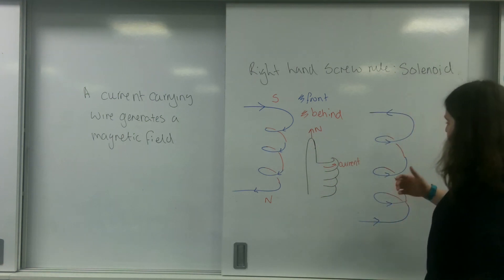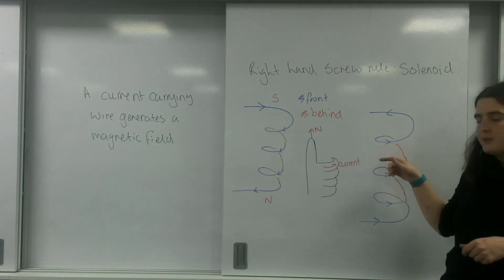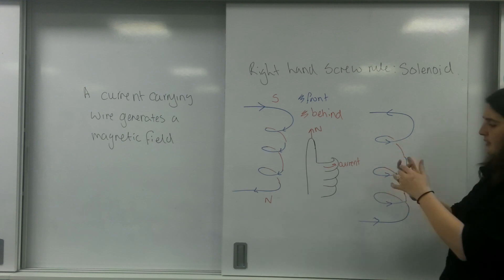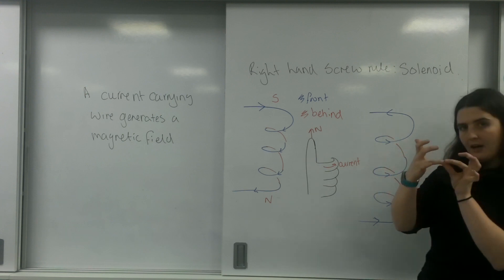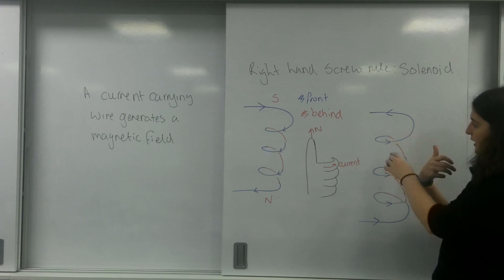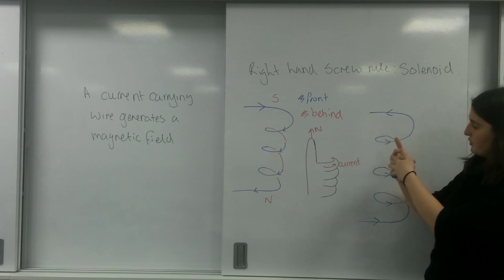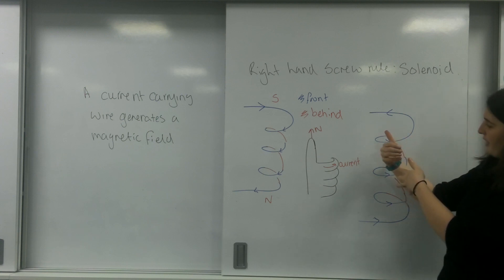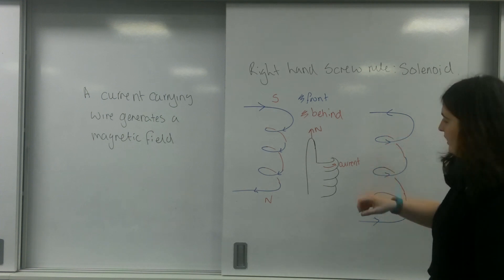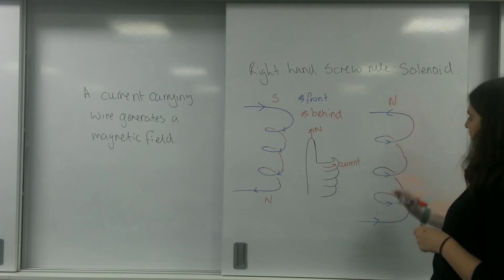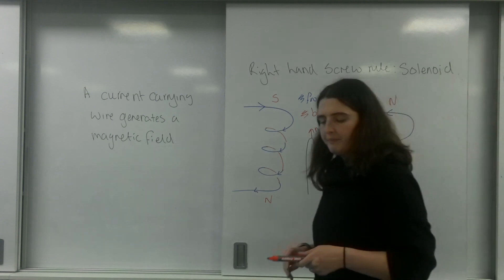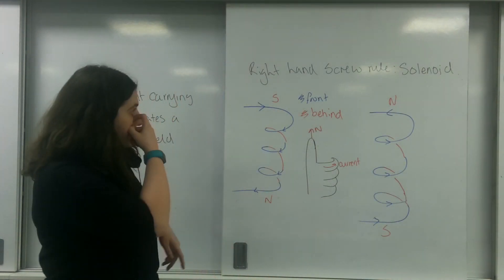If I have the current going in the opposite direction, my fingertips represent the current arrows going the other way on the blue front part. As you can see, the current has flipped around, so now the north and south poles swap: that end becomes north and the other becomes south.